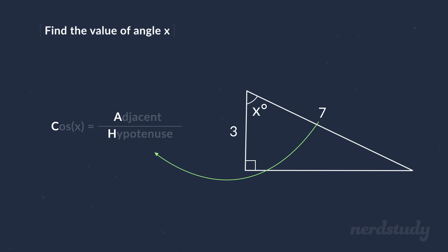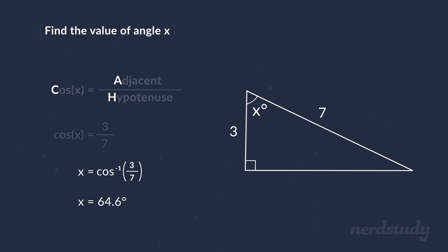Great. So let's go ahead and plug in our values. We've got cosine of x, which is equal to 3 over 7. From here, all we need to do is get the inverse cosine of 3 over 7 to get this. Now we just punch that into our calculator to get x equals roughly 64.6 degrees. And that's our value for x.